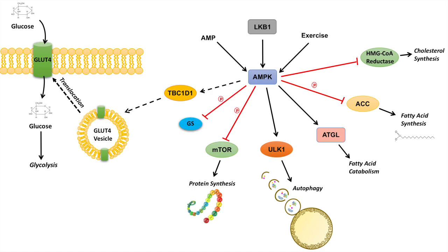The last point is that AMPK actually inhibits glycogen synthase, so it inhibits glycogen synthesis. That makes sense — the cell is taking up more glucose through increased glucose uptake, but then inhibiting glycogen synthesis through AMPK, directing glucose toward energy production rather than storage.